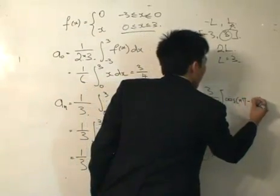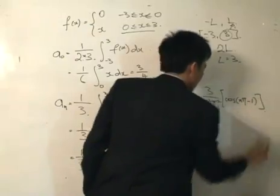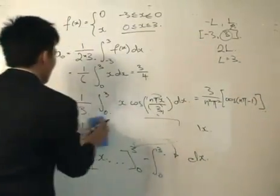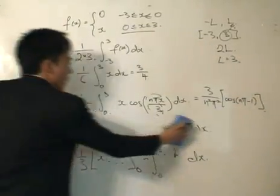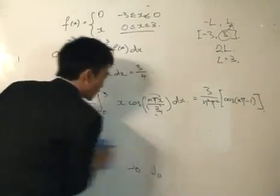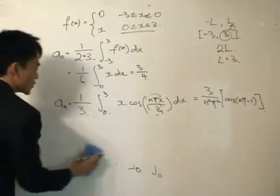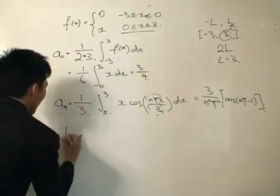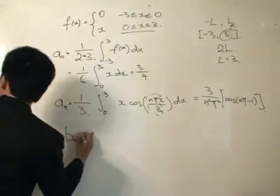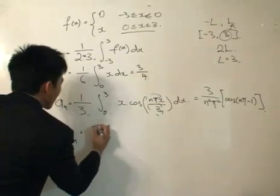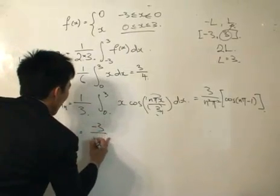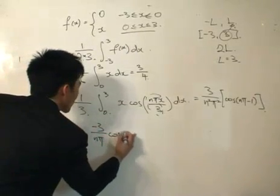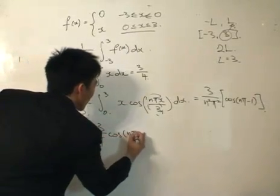So aₙ = 3/(n²π²) · (cos(nπ) - 1). Likewise, computing bₙ — which you can verify — gives bₙ = -3/(nπ) · cos(nπ). So we now have all our Fourier coefficients.